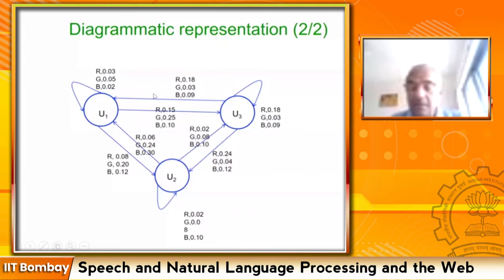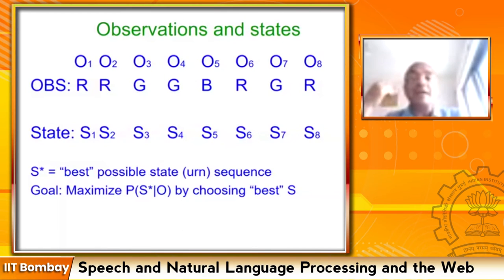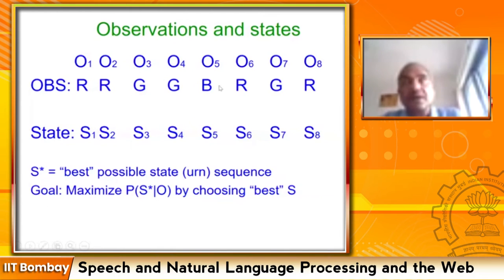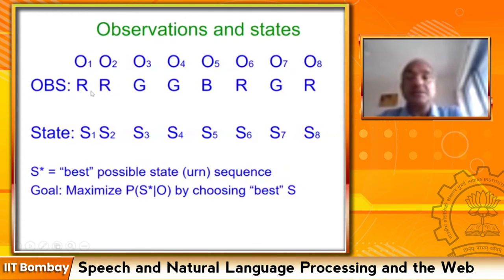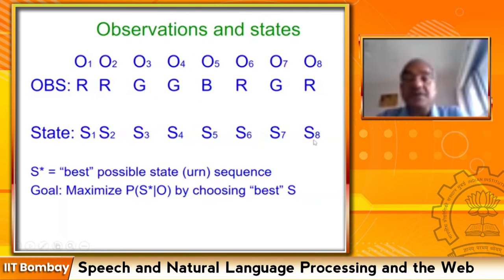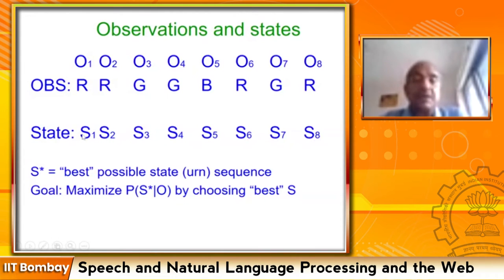Now we come to some theory about why we are allowed to do the computation the way we are doing — why we can take products. The situation: we have o1 through o8, eight observations (R, G, G, B, R, G, R...), and the states are s1 through s8. Here I am using s notation for states.